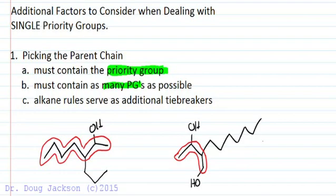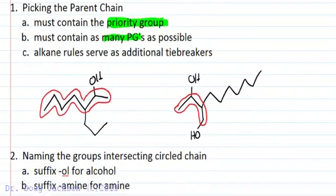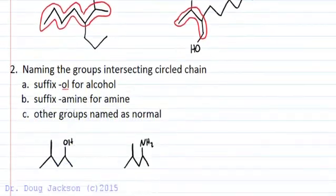Any tie breakers for what's the priority group go by the alkane tie breakers: starting with number of groups — most branches wins — then lowering the numbers, then alphabetical order, and so forth.